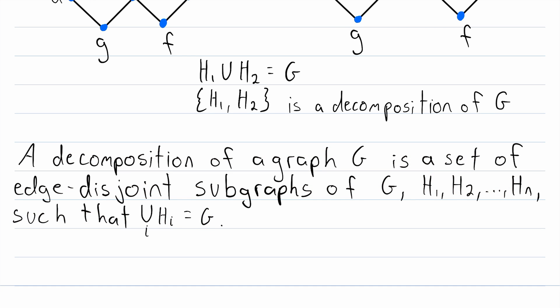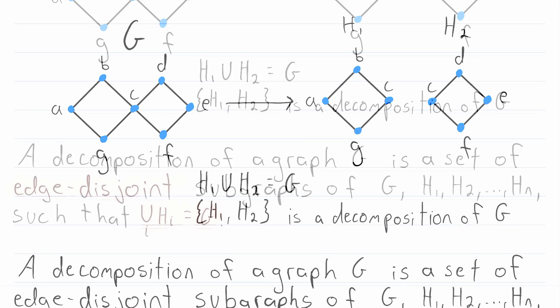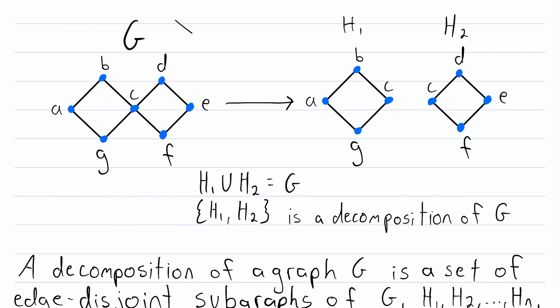So to decompose a graph into subgraphs, those subgraphs need to be edge disjoint, which means they have no edges in common. And when we union all of those subgraphs together, we need to get the original graph G. So now hopefully we can see exactly why this was a valid decomposition.